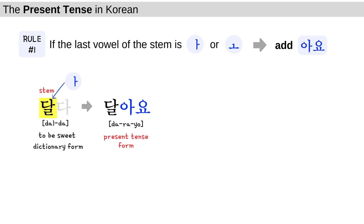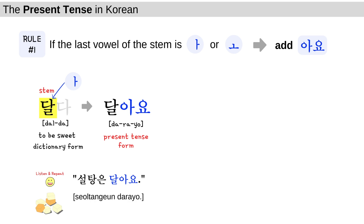달아요 is the present tense of 달다. Let's take a look at the sample sentence: 설탕은 달아요 — Sugar is sweet. 설탕은 달아요.